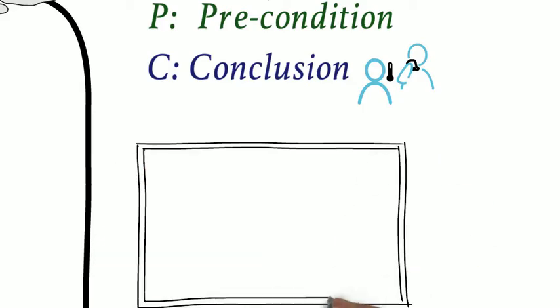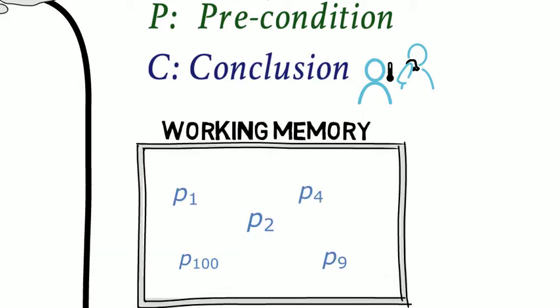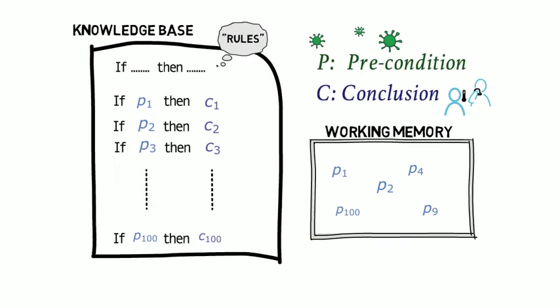To use the rules you need something else: a store of the things you know right now. So those two are in place. How do they work?